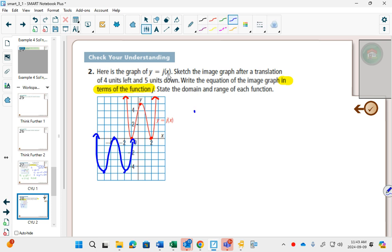So that means I need to write j of x on the right-hand side. Now, we're moving left and right, and moving up and down. Left and right happens inside the function, up and down, outside. So inside j, I'm going to be, as a liar, moving 4 to the left, will be plus 4.